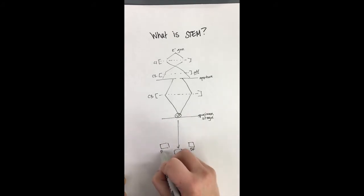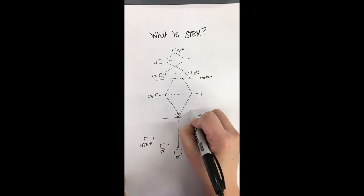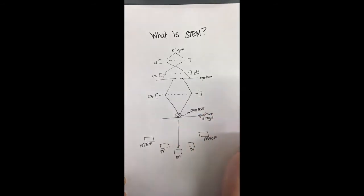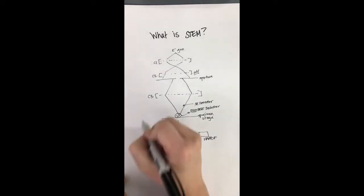This interaction produces electrons that then can be detected by bright field and dark field detectors underneath the specimen. Backscattered and secondary electrons can also be detected. However, the important thing to remember is that in STEM mode, the beam is focused to a single point at the sample.